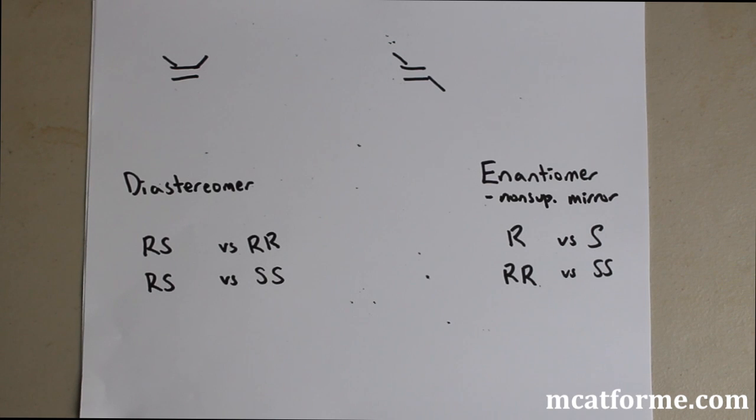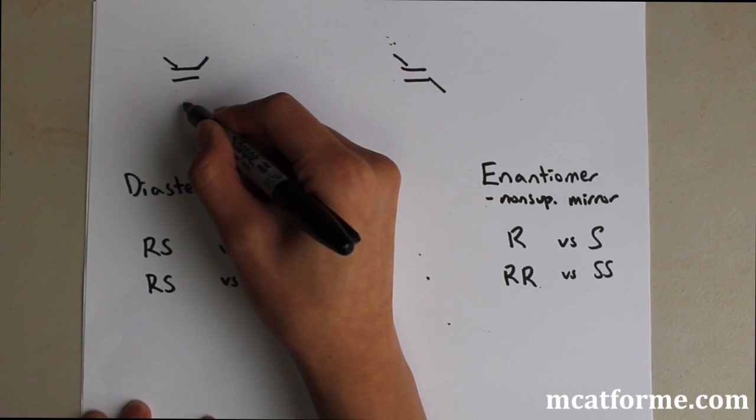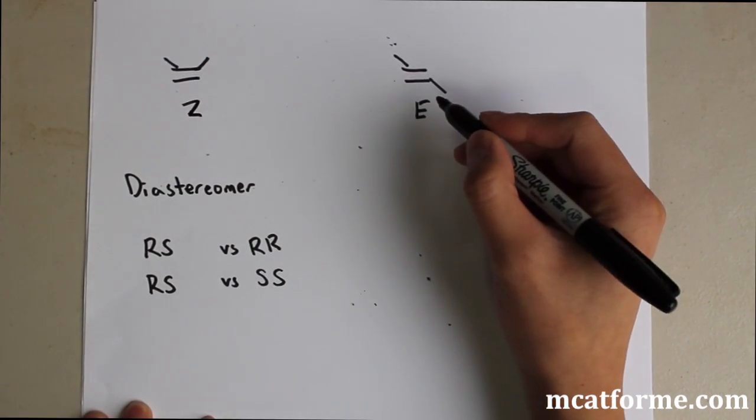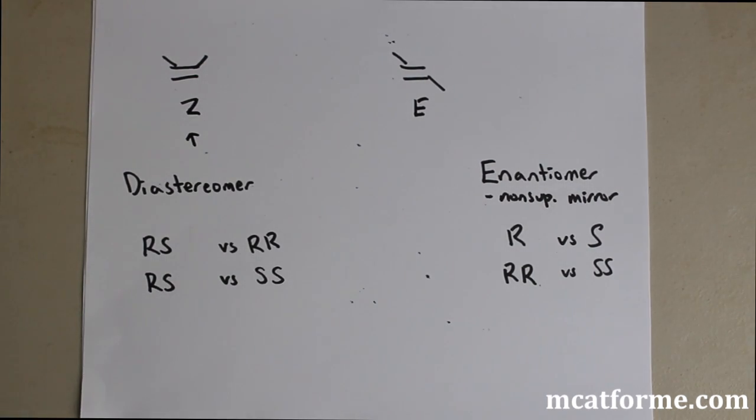So likewise, we mentioned that another type of geometric isomer is E versus Z. So E versus Z, we learned about this last lecture, I think. Z is on the same side and E is on opposite side. And Z is the most stable in terms of E versus Z.